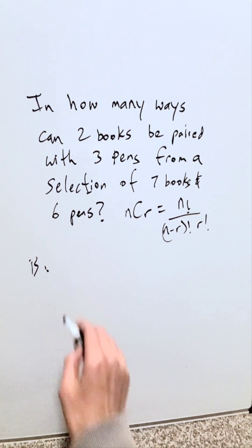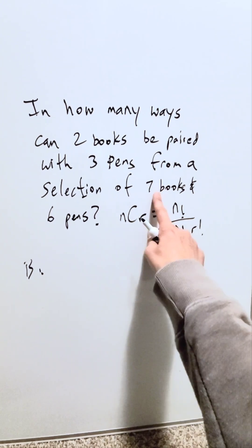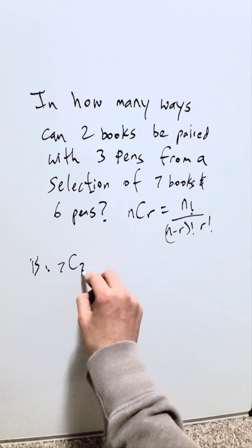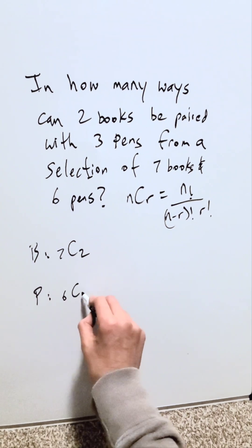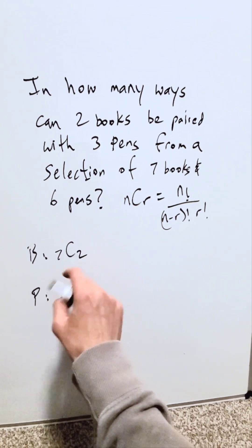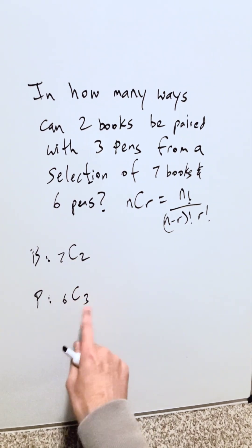Look here with books. I have to select two from seven. You'll write 7C2. What about with pens? I have to select three from six, 6C3. Here's my n, here's my r.